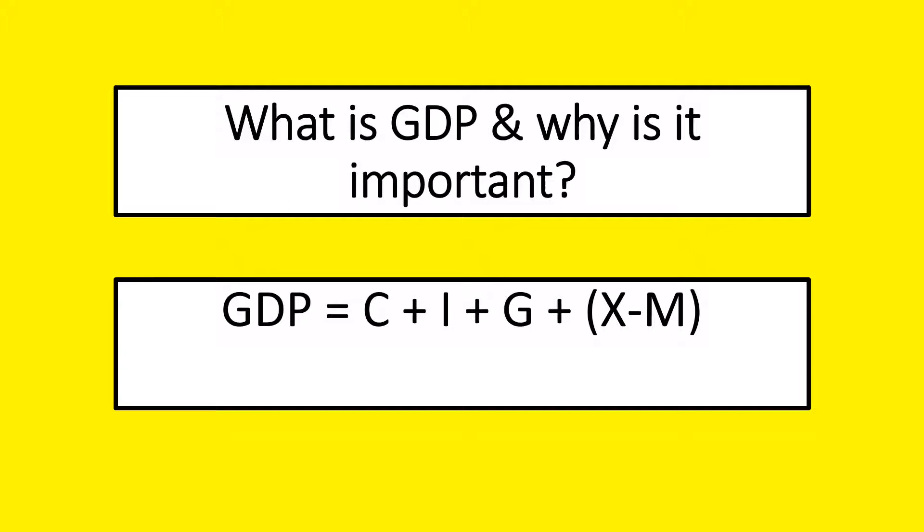X is exports. So those are the goods and services which are sold overseas. So our exports are added in and we then take off our imports. Those are the goods and services where the money goes overseas because they have been provided by other countries.